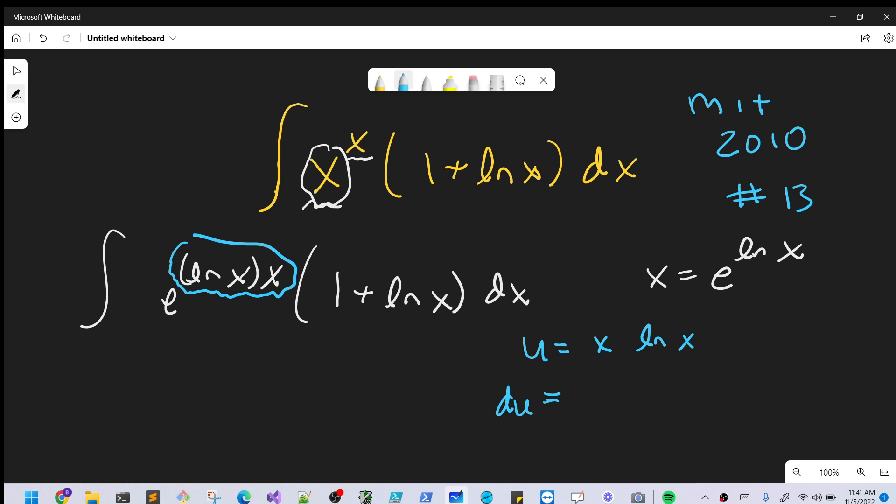Differentiate x, the derivative of x is 1 times ln x, plus then we'll leave the x and differentiate ln x, and that's going to be 1 over x dx. And then just simplifying this, when we simplify this x times 1 over x, this is just going to be a 1. So we're left with, for our du, we're going to have just ln x plus 1 dx.